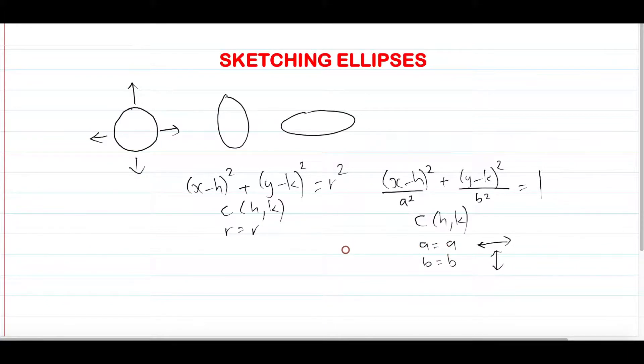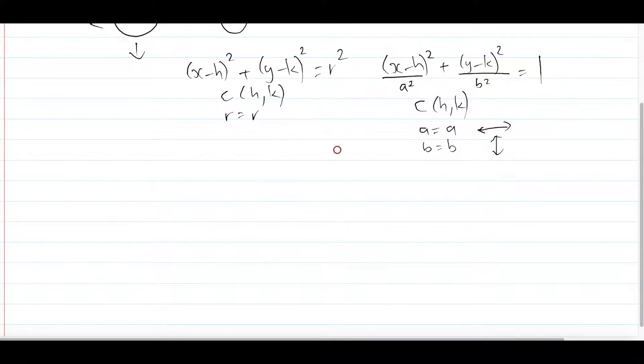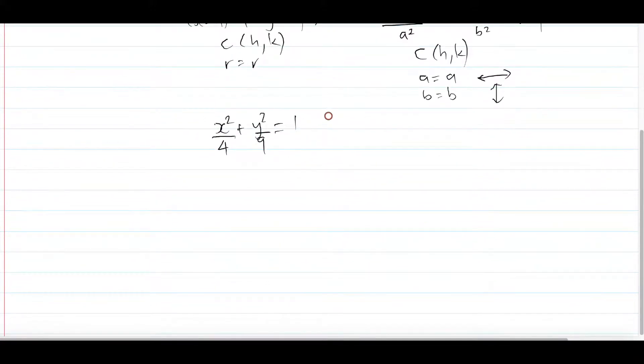So let's sketch an example of an ellipse. This will be a very simple one. Let's just have it as x²/4 + y²/9 = 1. So how would you sketch this? Very simple. There's only a couple of steps here. Step number 1: you find your center, which in this case is 0,0. There is no h,k, or there is, but it's just 0,0.